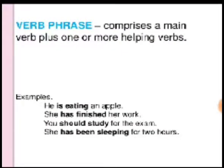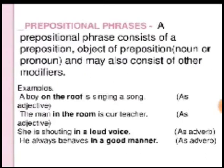The next type is the verb phrase, which comprises a main verb plus one or more helping verbs. Examples: 'he is eating an apple' — 'is' is the helping verb and 'eating' is the main verb; 'she has finished her work'; 'you should study for the exam'; 'she has been sleeping for two hours.' In each case, we can identify two or more verbs working together as a verb phrase.